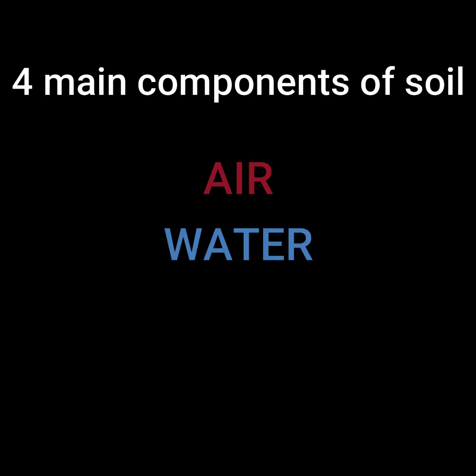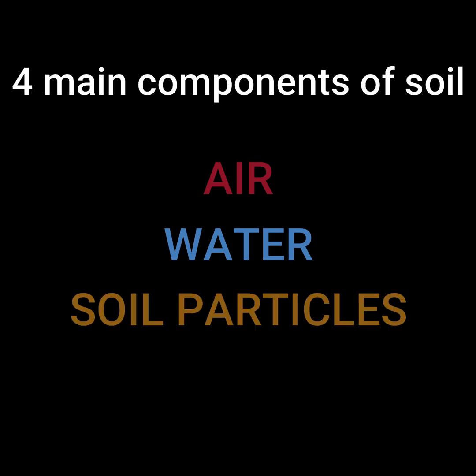Water. The air pockets also allow a space for water to flow, which is important for infiltration. Soil is also made up of soil particles which includes sand, silt, and clay. These components help determine soil texture, which is important in drainage of water through the soil.